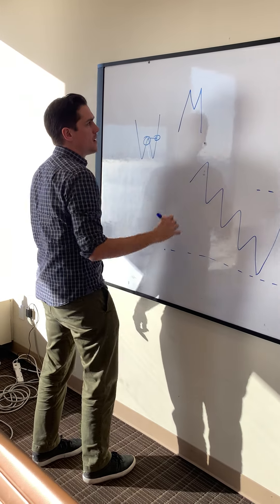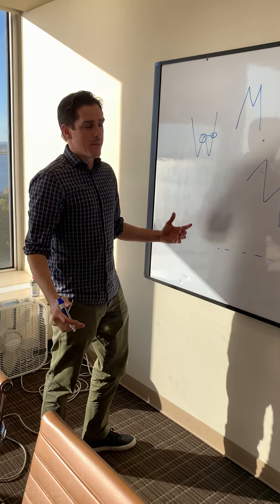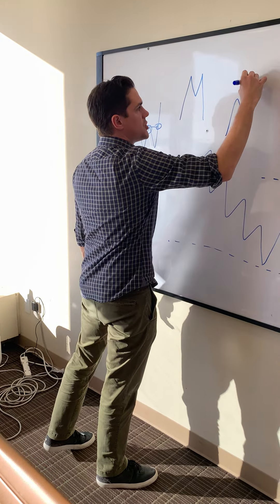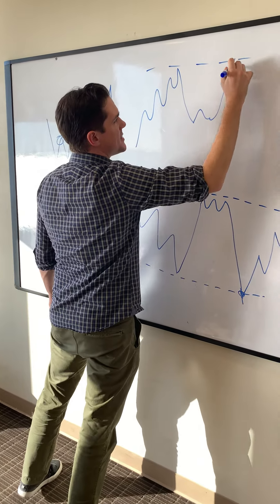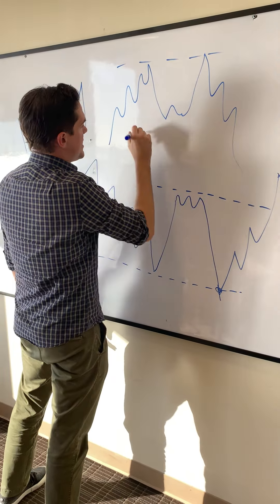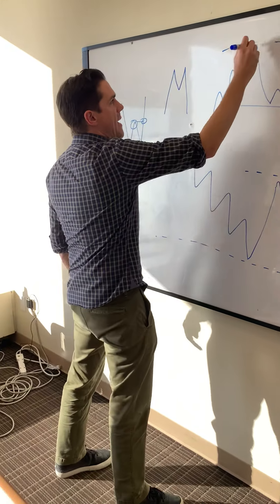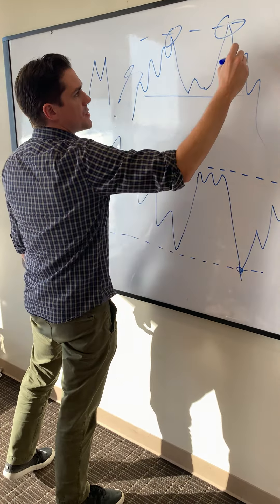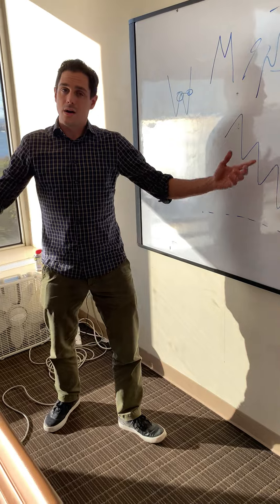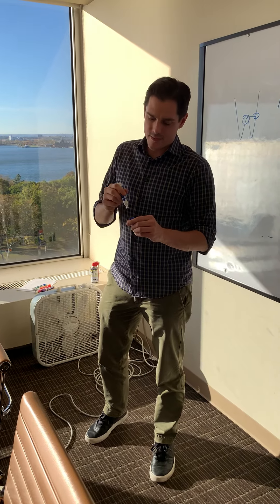Same thing: my uptrend finds resistance, pulls back, comes back up into that resistance, and then pulls down. When you break this low, BAM, double top off of resistance and I have a reversal from a trend higher to a trend lower. There you go, double tops and double bottoms.